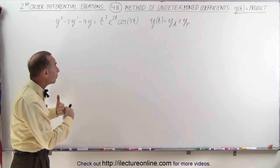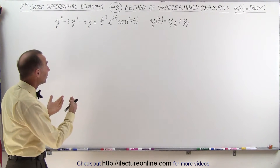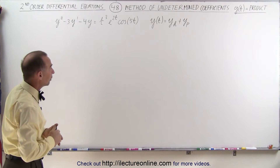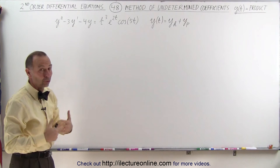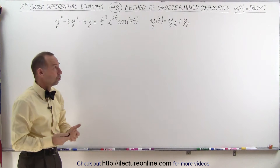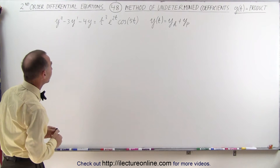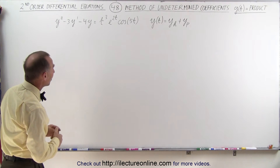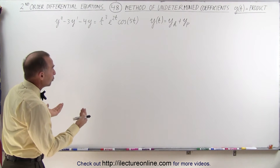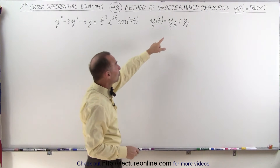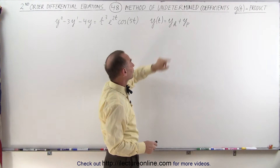So how do we find the particular solution to this so that we can find the total solution, or the general solution, of the differential equation? Well, what we're going to do, just as always, is find the homogeneous solution first.